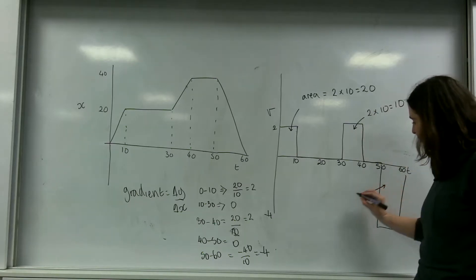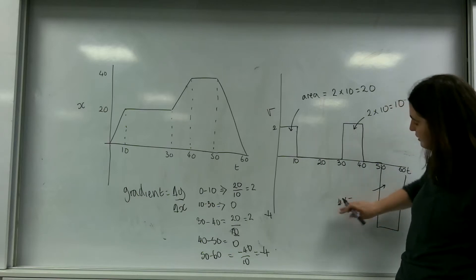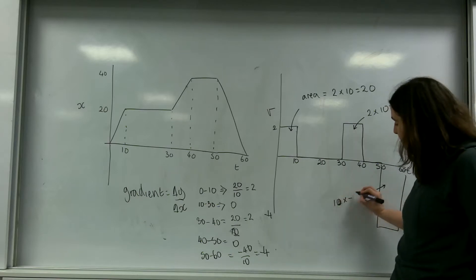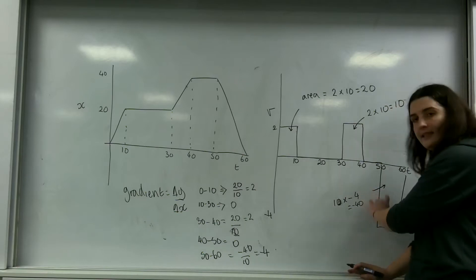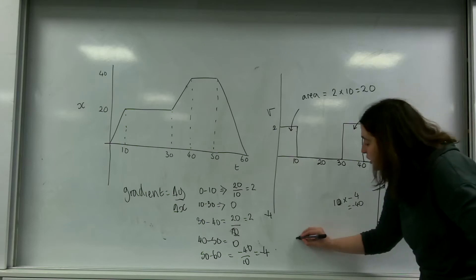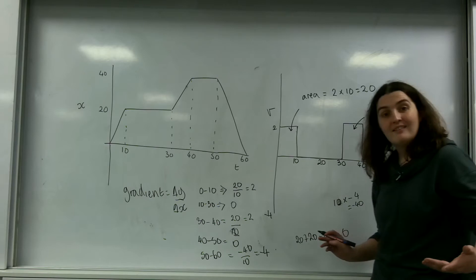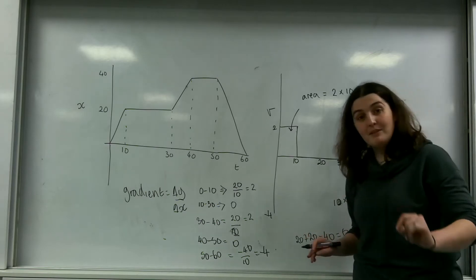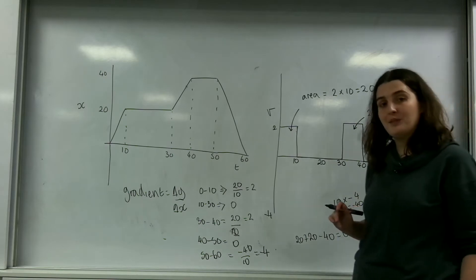And this one, which is 10 times minus 4, which is minus 40. If I add these areas together, so 20 plus 20 minus 40, I get 0. Because my displacement is 0. I have gone back to my original position.